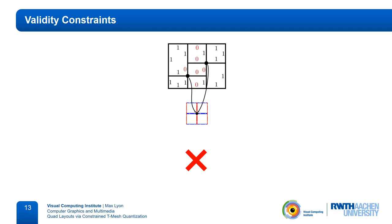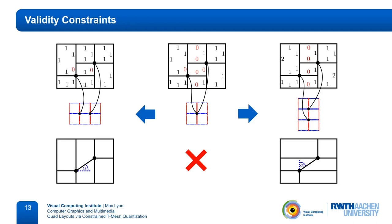Starting with the validity constraints. We already saw that there are two possibilities to resolve this issue. We can add separation in horizontal or vertical direction. Since we are aiming for layouts with little separatrix deviation, we will always opt to separate in the direction the two vertices already have the greater distance in. So, vertical separation in this case. So, how do we do this?